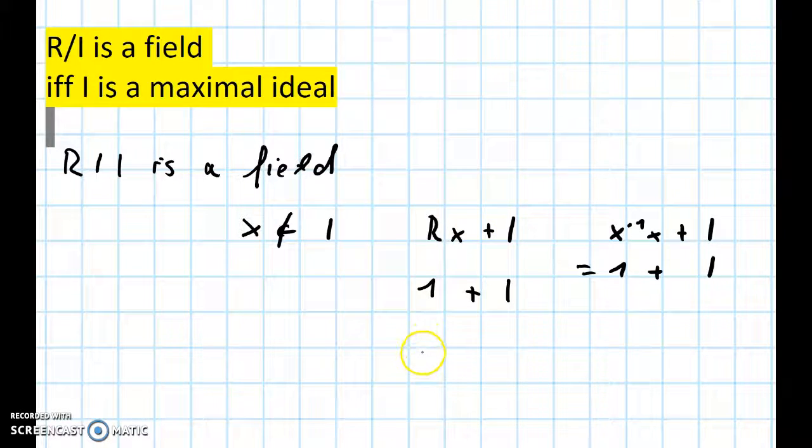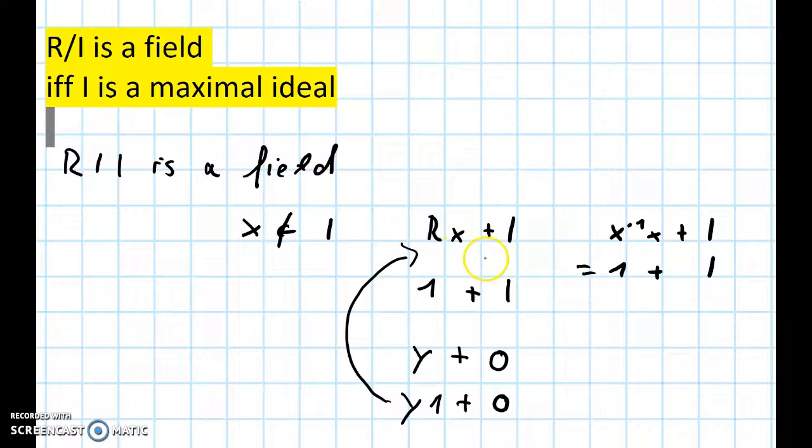Because you can write every element of the ring R in the form—let's call this element we want to write y—you can write y in the form y plus 0, which is the same as y times 1 plus 0, and this is in this ideal.